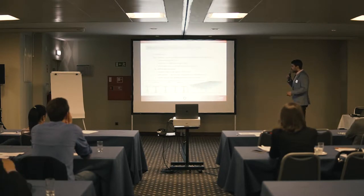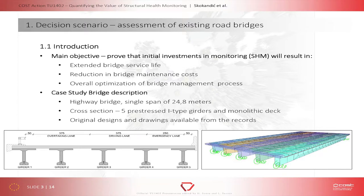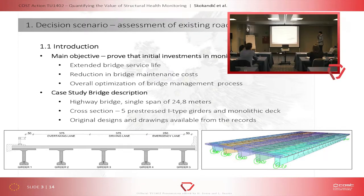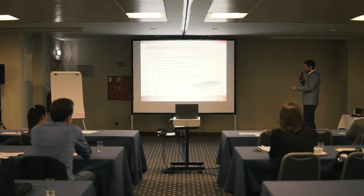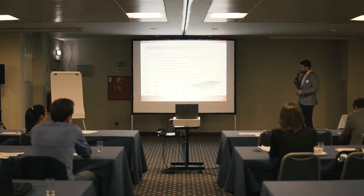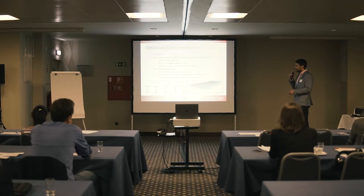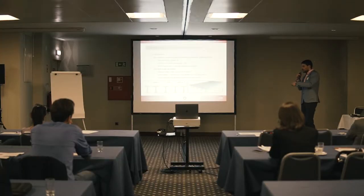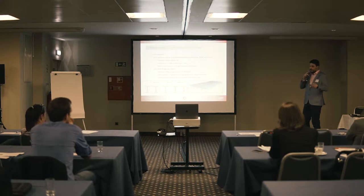This is the bridge. It's located in Slovenia — a highway bridge, small, with only a single span of almost 25 meters. The cross-section is a classic pre-stressed I-type girder connected with a monolithic deck. We had all the original designs and drawings, did a visual inspection back in 2016, and built a 3D model in sophisticated assessment software. The bridge is 26 years old — not old, but we used it because we had all the data and monitoring data.